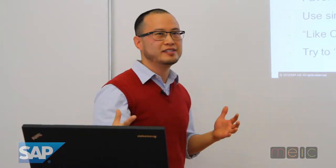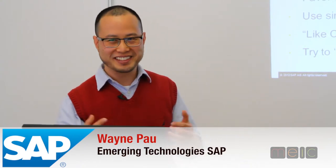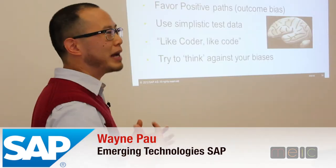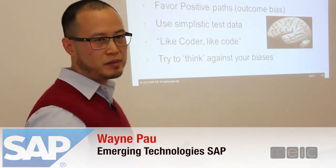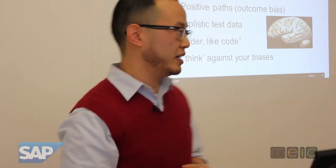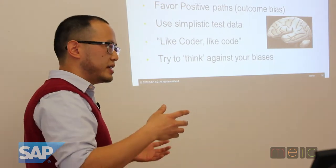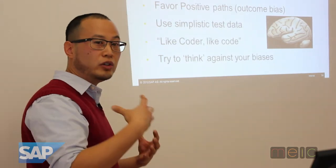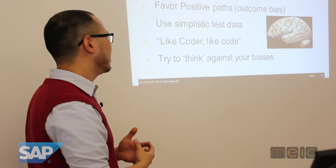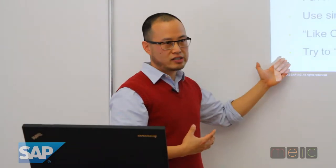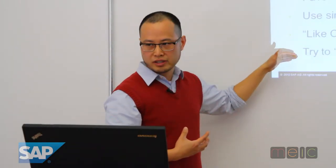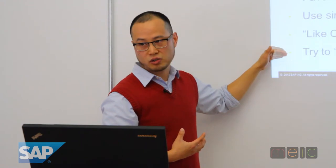So we're always influenced in all of our decisions. Like people who say they're not biased - it's just not true. We all favor paths and outcomes. I'm not telling you not to be biased. What I'm saying is be aware of your biases. We have biases maybe to simplistic data, or as a tester or a coder, we might look at the code a certain way. A good tester should be aware of those and do their best to think against their biases.